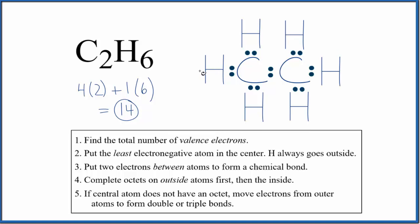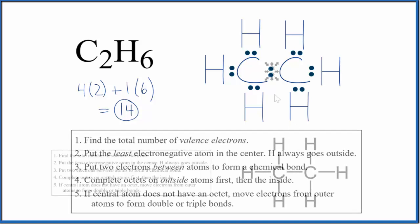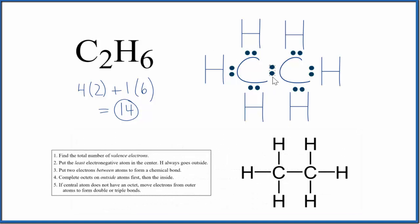So this is the Lewis structure for C2H6. You could also write it like this, where each pair of electrons is represented by a line to show that covalent bond.